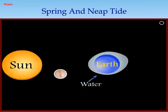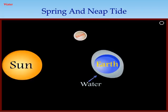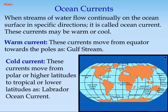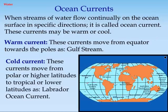This animation shows the formation of spring and neap tide. Ocean currents: when streams of water flow continually on the ocean surface in specific directions, it is called an ocean current. These currents may be warm or cool. Warm currents move from the equator towards the poles, such as the Gulf Stream. Cold currents move from polar or higher latitudes to tropical or lower latitudes, such as the Labrador Ocean current.